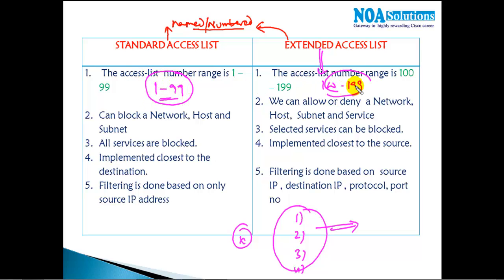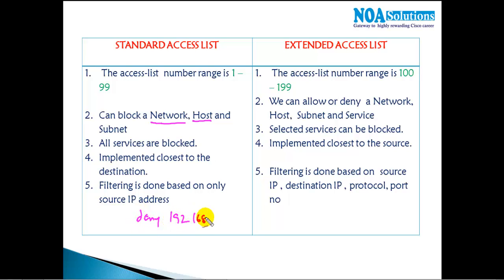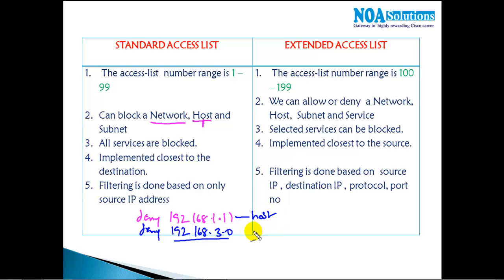Just by seeing the number range, the router identifies whether it is extended or standard — you don't need to explicitly state it. In a standard ACL, you can allow or deny a specific host, like deny 192.168.1.1, or deny a complete network like 192.168.3.0. So here you deny a specific host and here you deny a specific network or subnet.